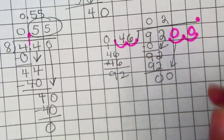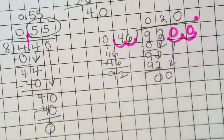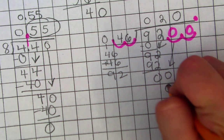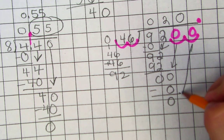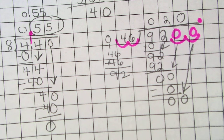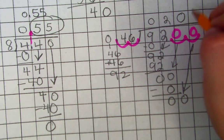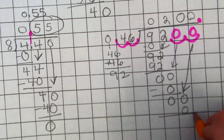46 can go into 0, 0 times. Subtract. 0. Bring down your other 0. It goes in 0 times. 0.